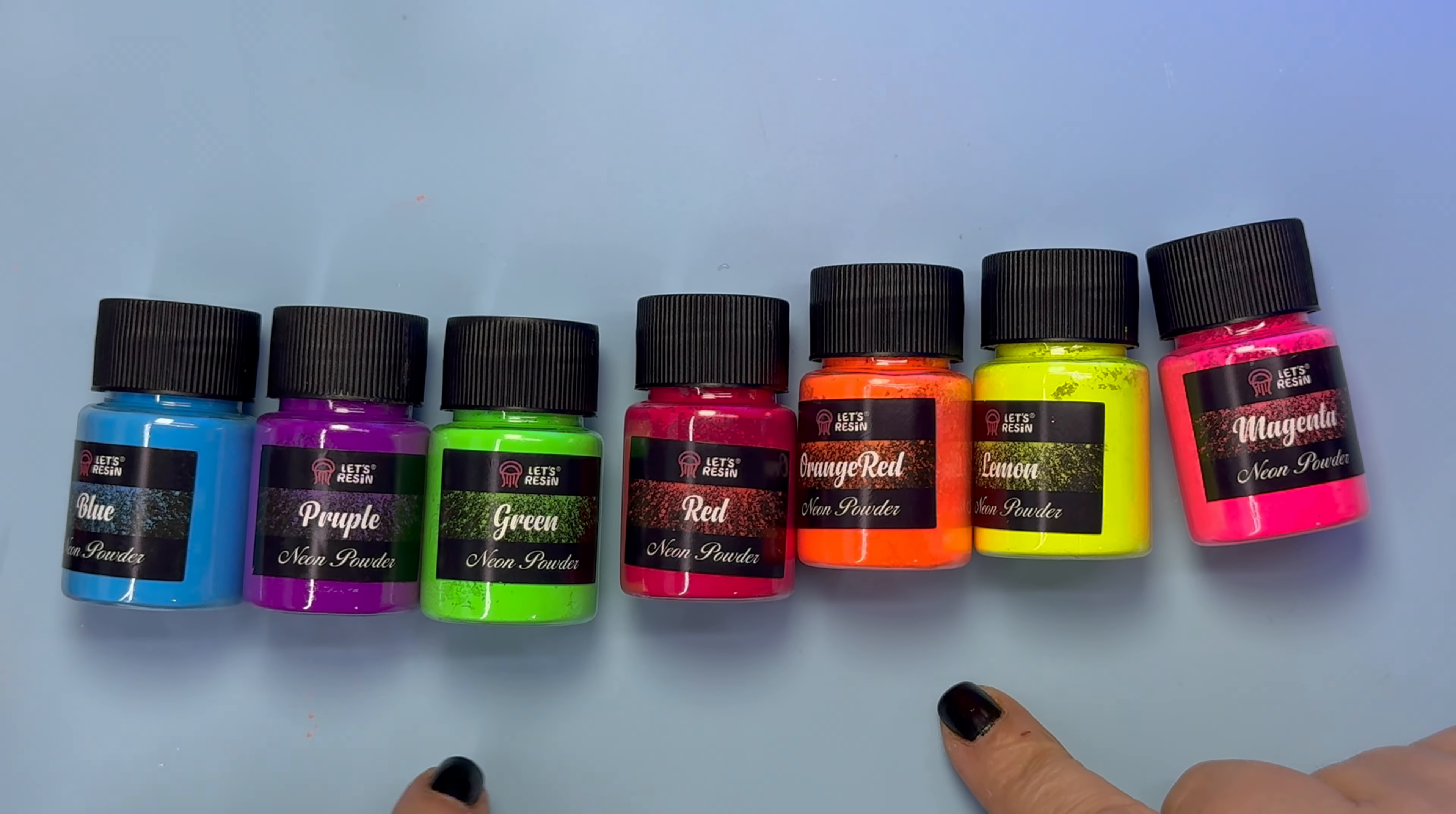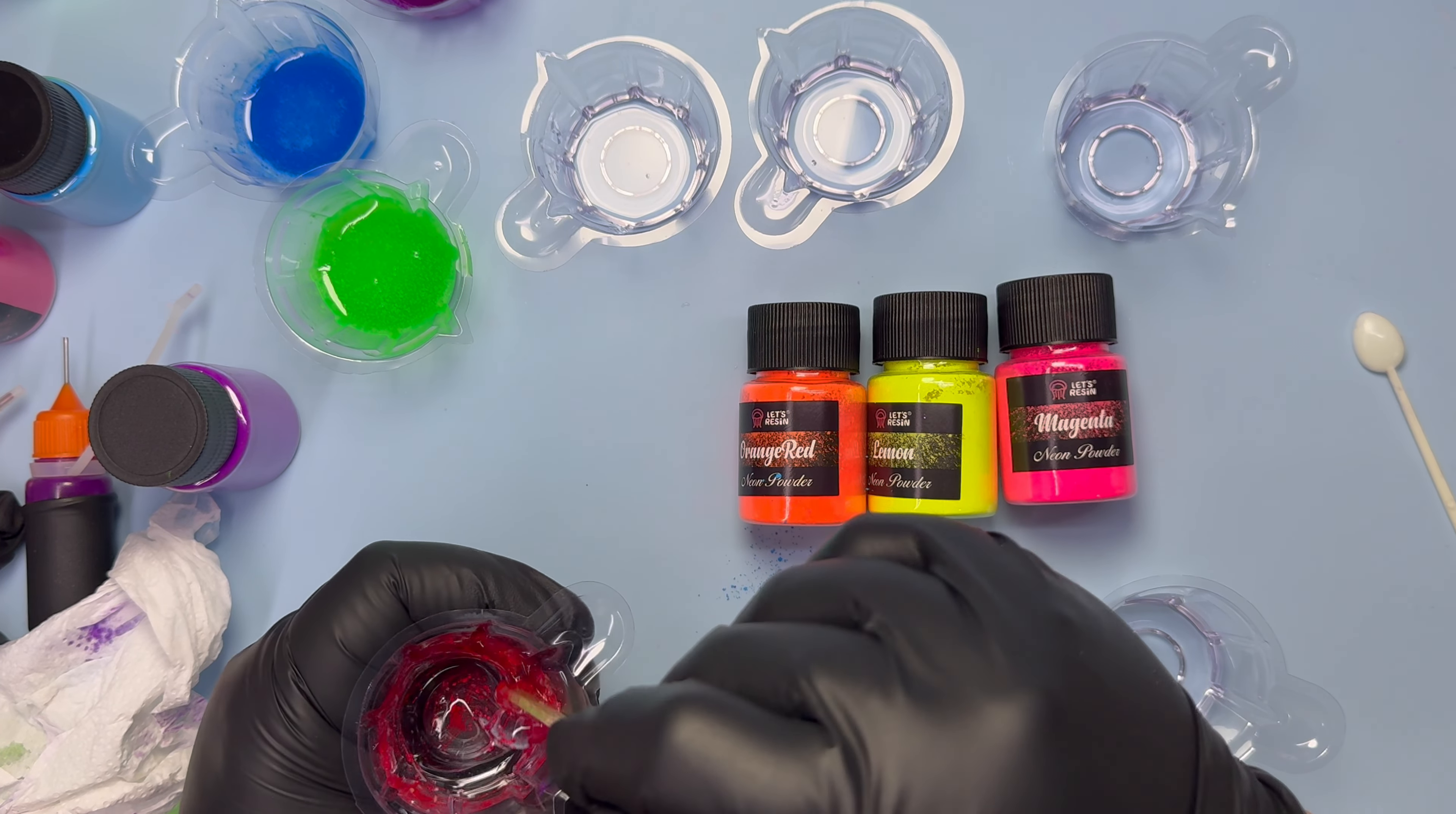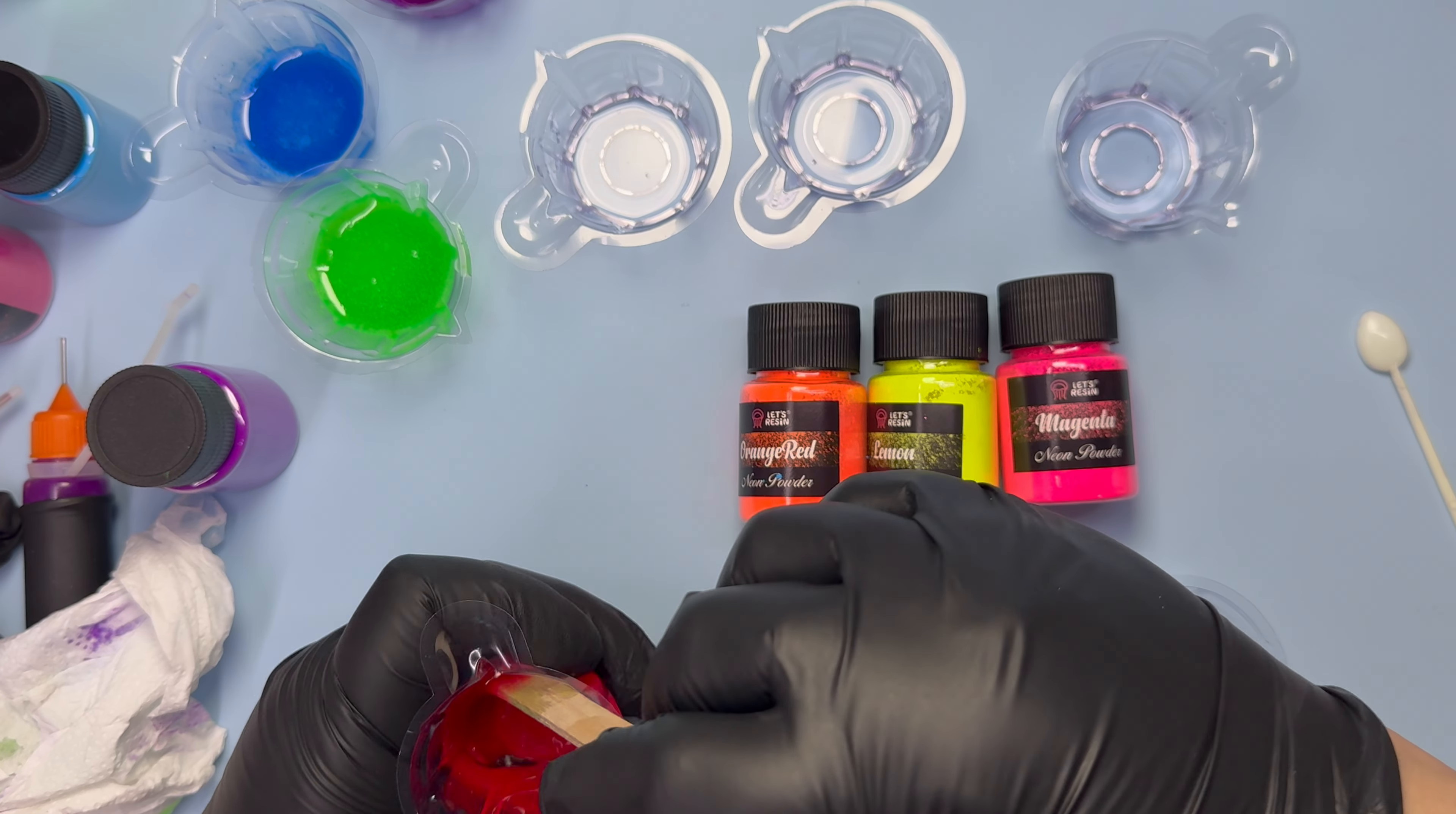For this second technique, I'll be using Let's Resin neon powders. All the products I use will be added in the description box. You will also find discount codes. I'm going to mix them in with a bit of UV resin and add them into little bottles.